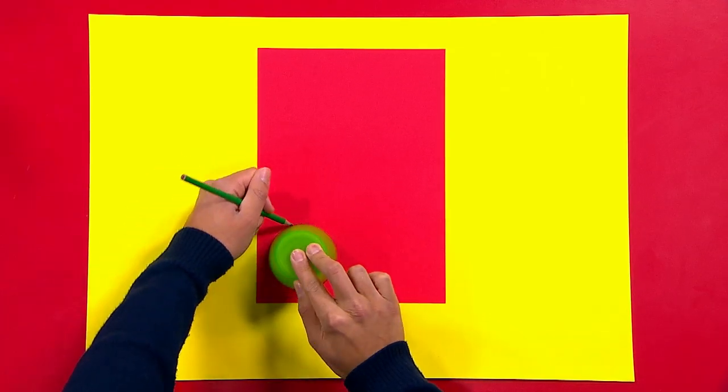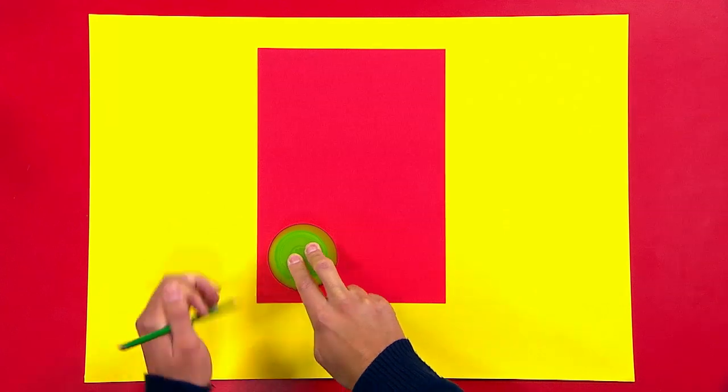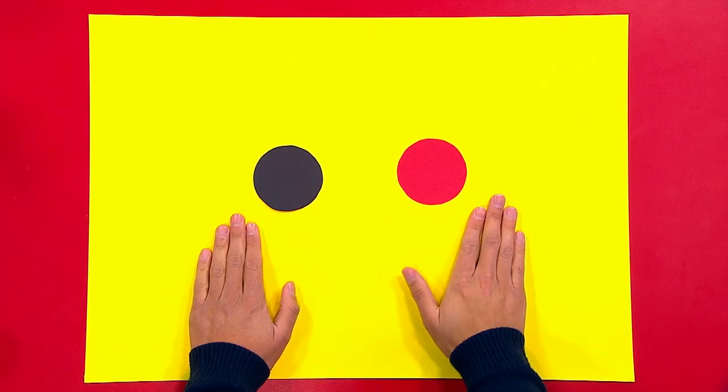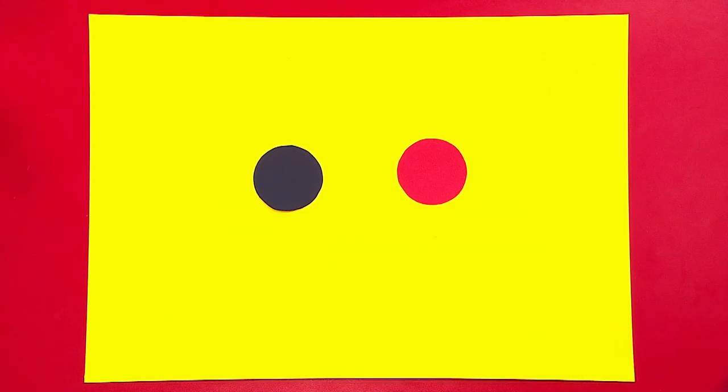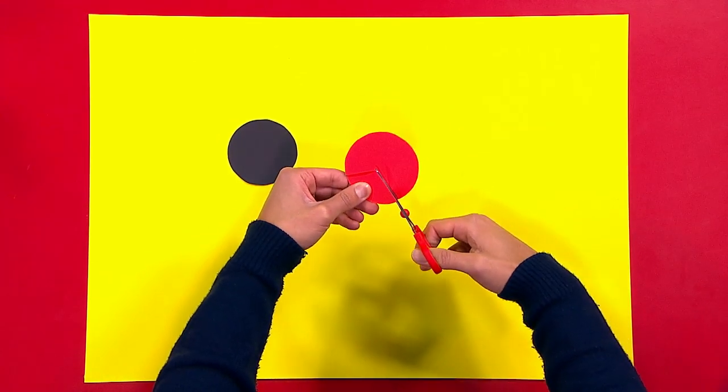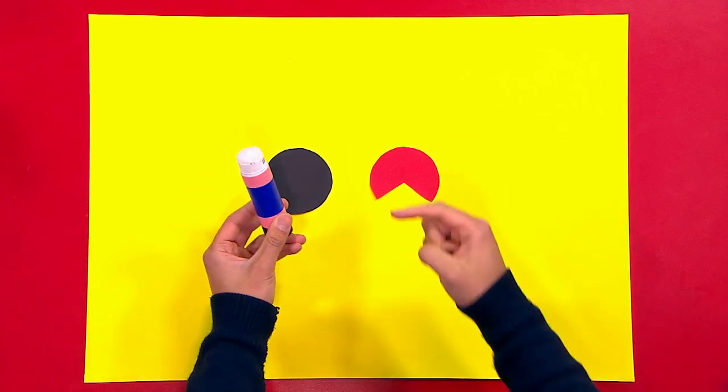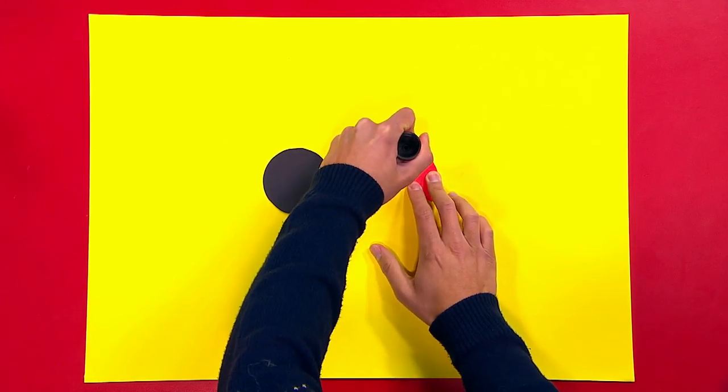Now using the cup, draw two circles, one on the red card and then one on the black card, and then cut them out. Take the red card and cut a V shape into it to make some wings. Then glue the red card onto the black card.